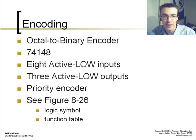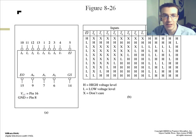In encoding, you have an octal to binary encoder, as well as your last type, the 74148. It's 8 active low inputs and 3 active low outputs, as shown here.